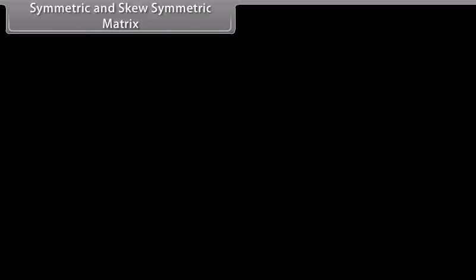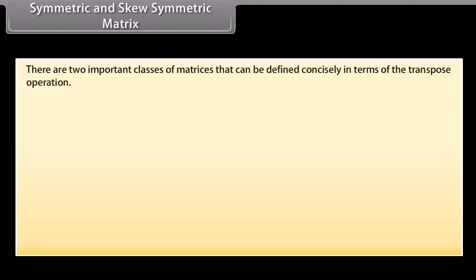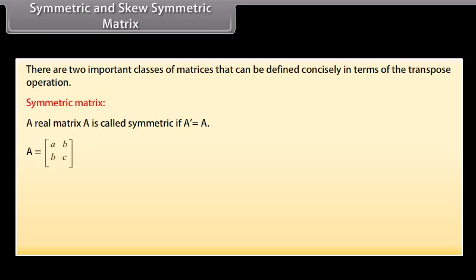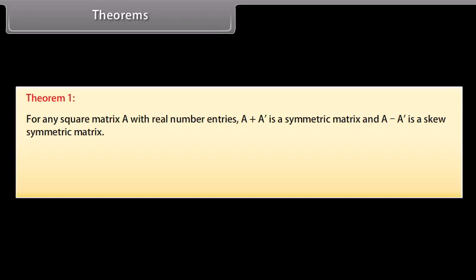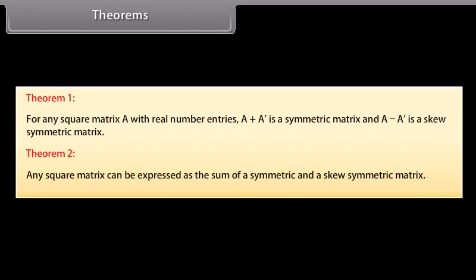Symmetric and skew-symmetric matrices: There are two important classes of matrices defined using the transpose operation. A real matrix A is called symmetric if transpose of A equals A. A is a general 2×2 symmetric matrix. A real matrix A is called skew-symmetric if transpose of A equals minus A. For any square matrix A with real entries, A + A' is symmetric and A − A' is skew-symmetric. Any square matrix can be expressed as the sum of a symmetric and a skew-symmetric matrix.